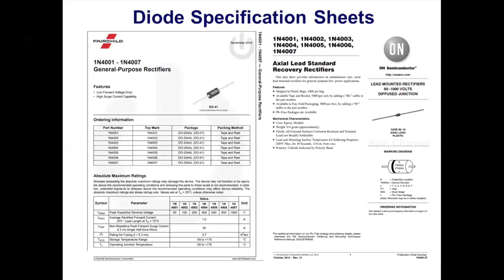A portion of a typical datasheet is shown here from Fairchild Semiconductor Corporation, and another datasheet from ON Semiconductor is shown here. If you look at these two datasheets, most datasheets start with the device type number at the top of the page, such as 1N4001 to 1N4007. The part number is the same regardless of the manufacturer. Here, the part number 1N4001 signifies a single junction device, that is, a diode. A short description title follows the type number — you can find 'general purpose rectifiers' or 'standard recovery rectifiers' and 'general purpose low power applications'.